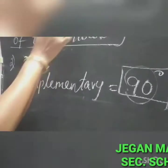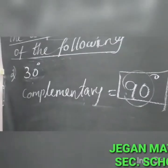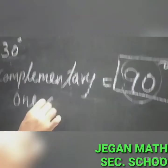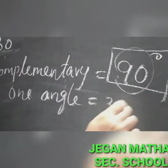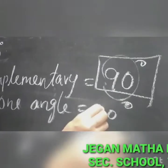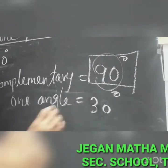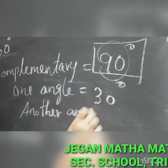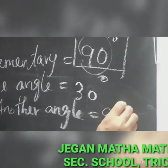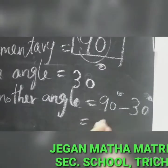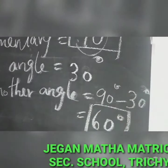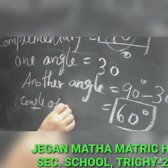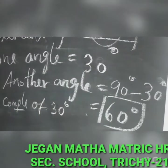Now the second one: 30 degrees is given. You have to find the complementary of 30 degrees. The pair of complementary angles equals 90 degrees. One angle equals 30 degrees, so another angle equals 90 degrees minus 30 degrees, which is 60 degrees. Therefore, the complementary of 30 degrees is 60 degrees.